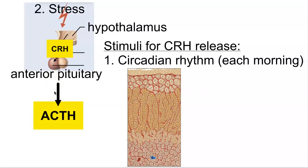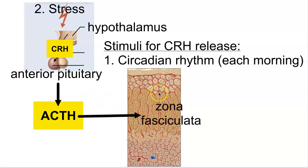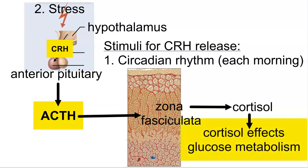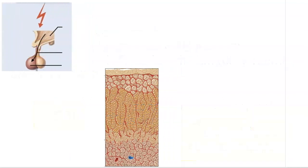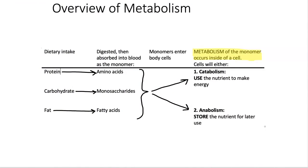Adrenocorticotropic hormone primarily targets the zona fasciculata of the adrenal cortex, causing that region to release cortisol. Cortisol primarily affects glucose metabolism, which is not the same thing as regulating blood glucose levels — let me show you what I mean.